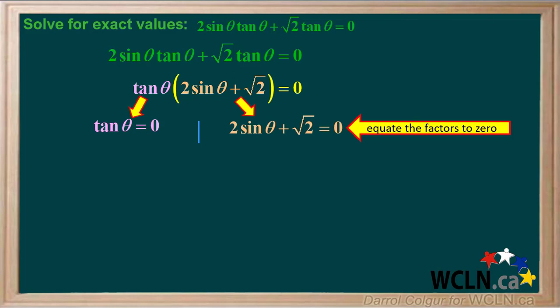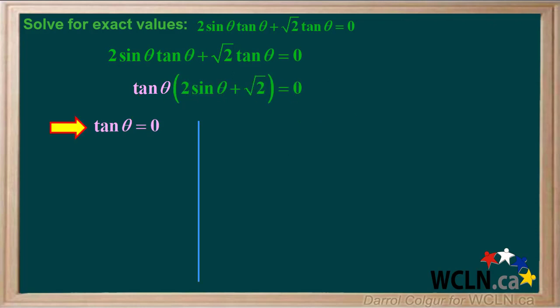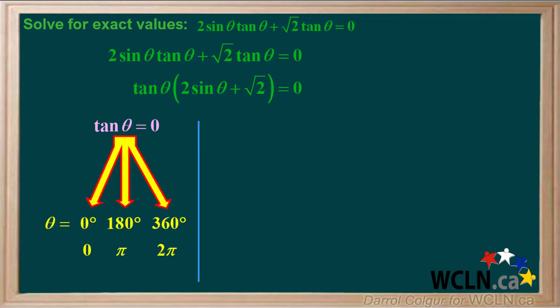We'll solve this equation by equating both factors to 0. Starting with the factor on the left, tan theta equals 0. Tan theta equals 0 for 0 degrees, which is 0 radians, for 180 degrees, which is pi radians, and for 360 degrees, which is 2 pi radians.